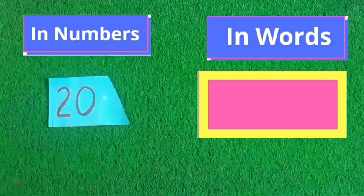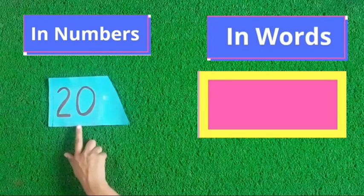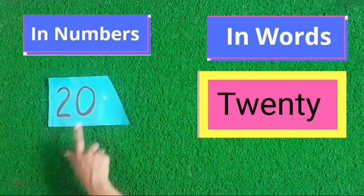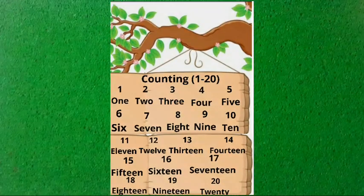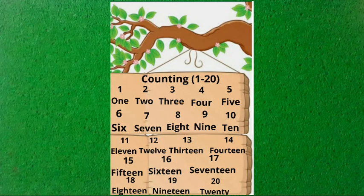What comes after 19? Yes, 20. Now kids, you will have to write counting from 1 to 20 in numbers and in words on your notebooks at your homes. You will have to write counting in a beautiful handwriting. Thank you. Bye-bye.